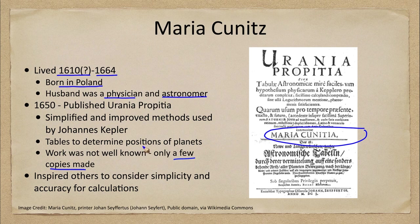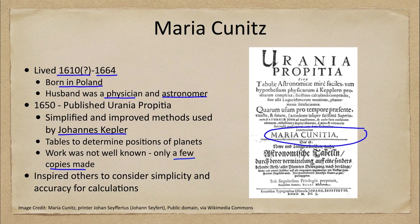It was tables to predict the positions of planets, and what she did specifically was to improve the methods used by Johannes Kepler. Kepler had developed laws of planetary motion and better ways to predict where a planet would be compared to earlier methods based on a geocentric universe. Now, with a heliocentric, or Sun-centered, universe, Maria was able to improve and simplify these methods.